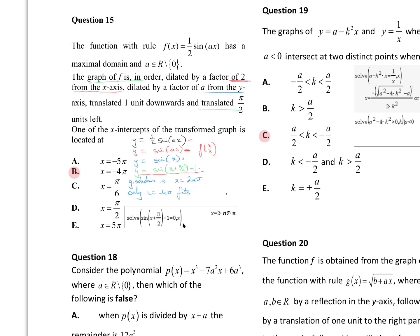One of the x-intercepts of the transformed graph: if that's sine(x + π/2) minus 1, I need to solve sine of (x + π/2) equal to 0 on the CAS. Sine of (x + π/2) minus 1 equal to 0 gives x equal to some 2nπ — that's my general solution. 2nπ means an even whole number times π, so the only one that satisfies that is B; since n is an element of Z, B must be the only possibility.